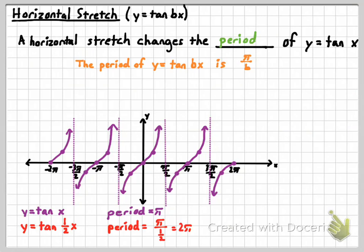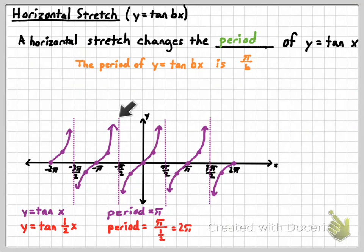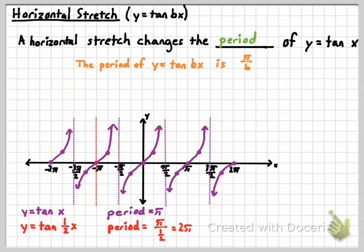If we double the length of the period, we're going to be doubling the distance between the vertical asymptotes as well. The central value is going to stay in the same place, but each asymptote is going to get twice as far away from the y-axis as it originally was. Whereas you would normally have a vertical asymptote at negative pi over 2, whenever the period stretches to twice that, now the asymptote is going to occur at negative pi. And the asymptote at pi over 2 is going to get stretched out to pi.